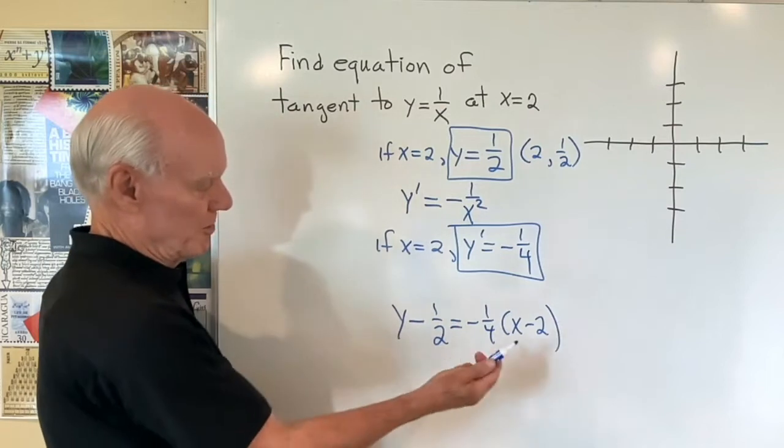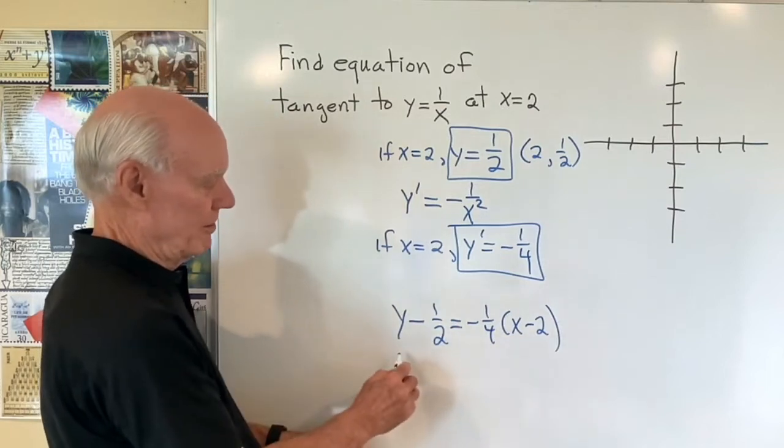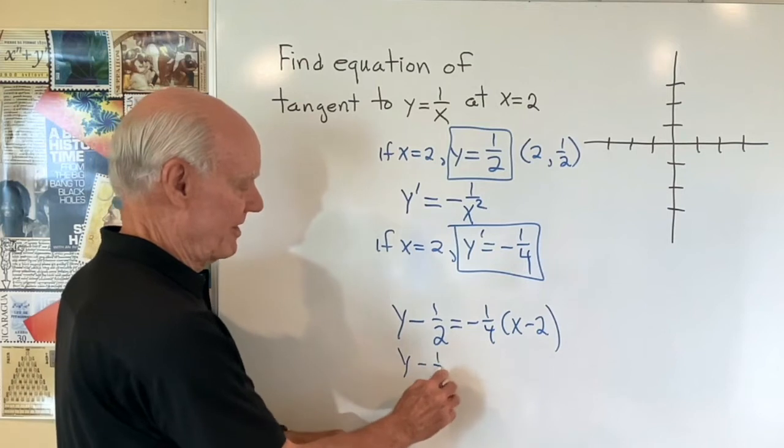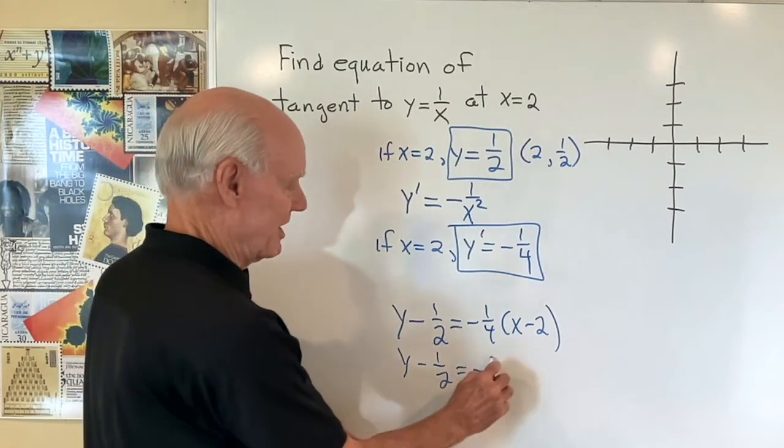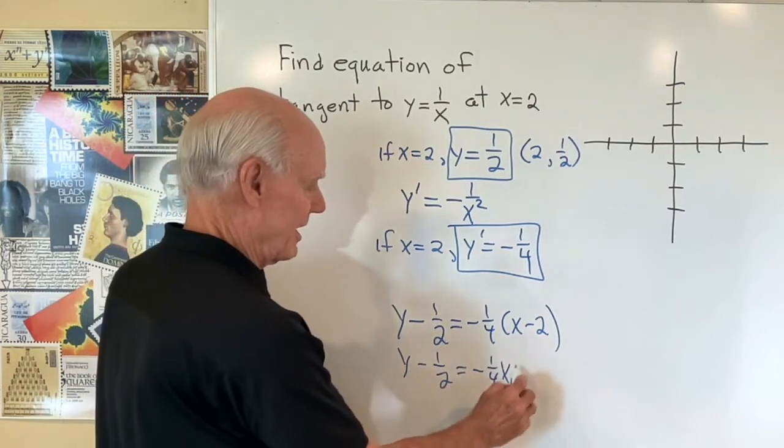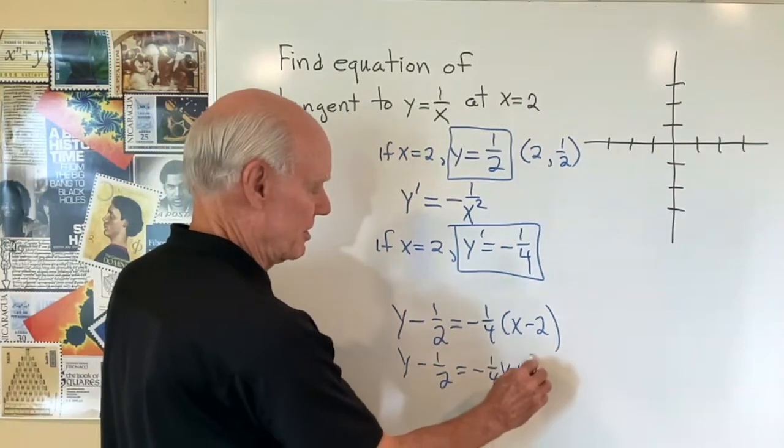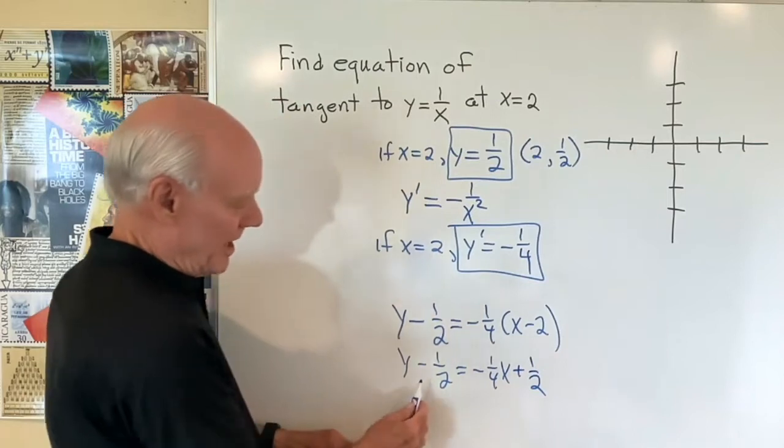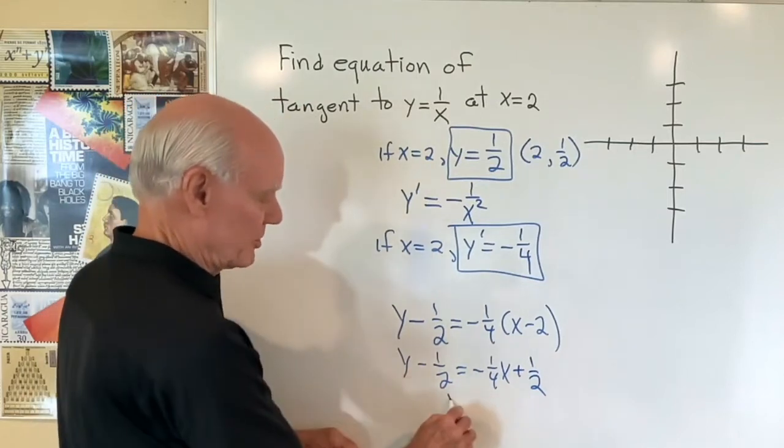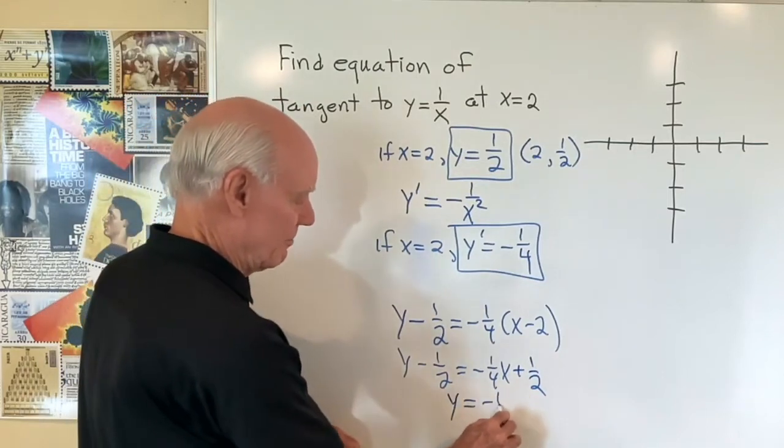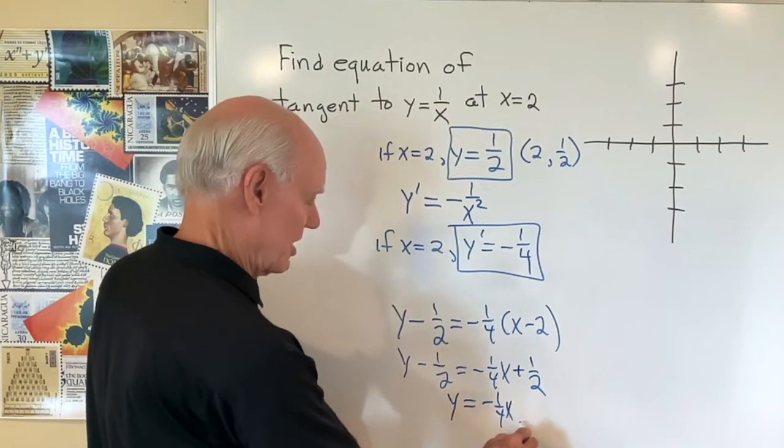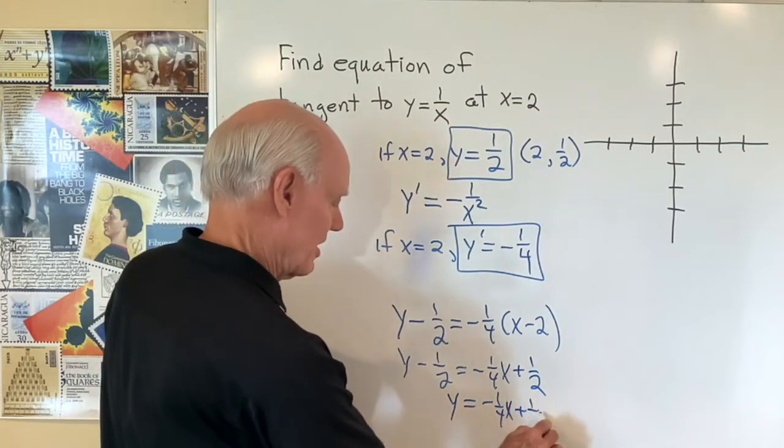And let's see, let's multiply both sides by four. No, let's not do that. Y minus one half is equal to negative one fourth x. And then I multiply negative one fourth times negative two and get positive one half. And then I'll subtract one half from both sides, y is equal to negative one fourth x plus one.